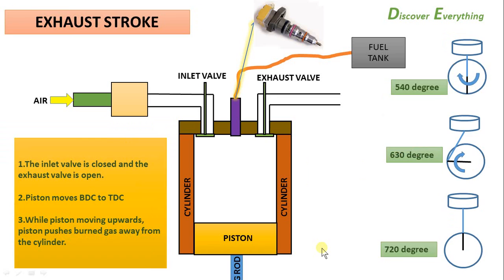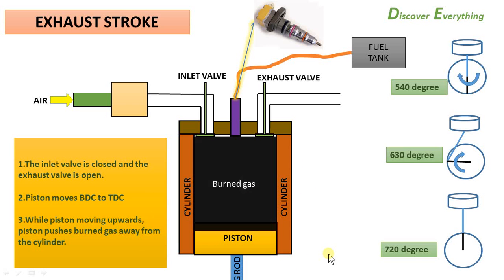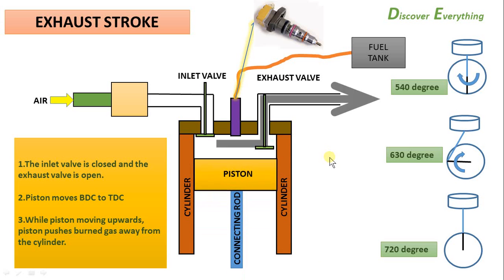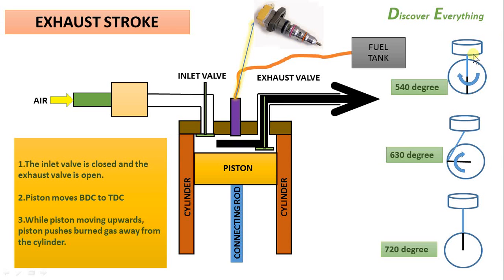Next is the exhaust stroke. In the exhaust stroke, the exhaust valve is open. The piston moves from bottom dead center to top dead center. The already burnt gas inside the cylinder is pushed out through the exhaust port. The crankshaft completes another 180 degrees of rotation — a total of two full rotations — completing the exhaust stroke and the full 4-stroke cycle.